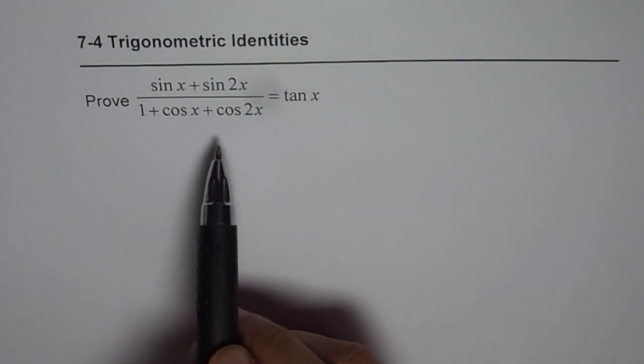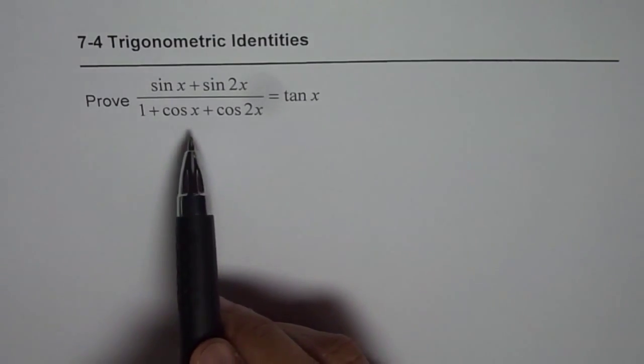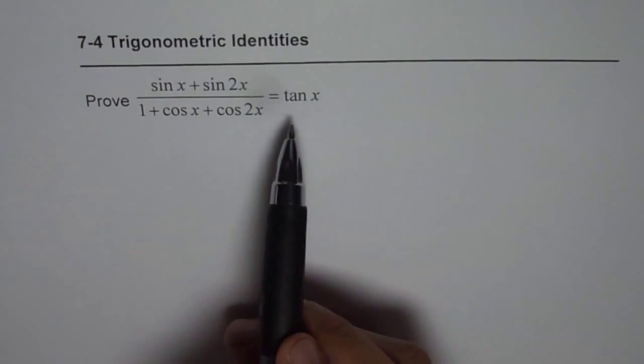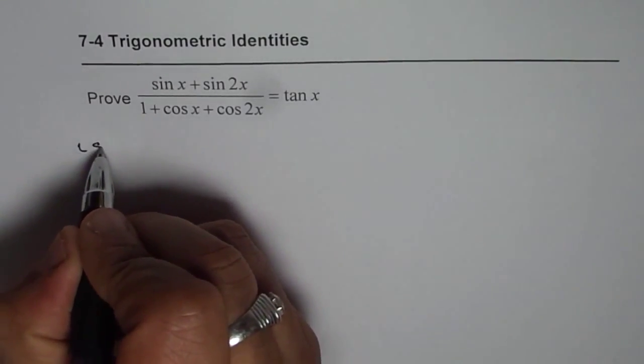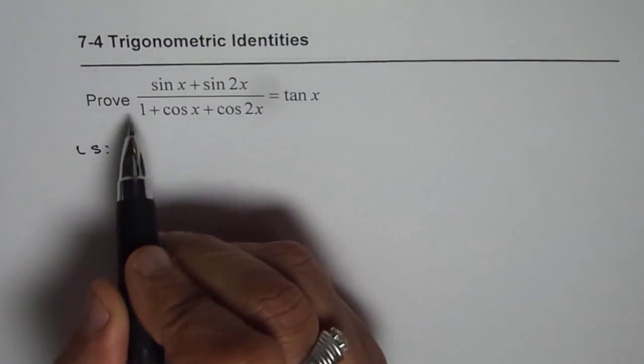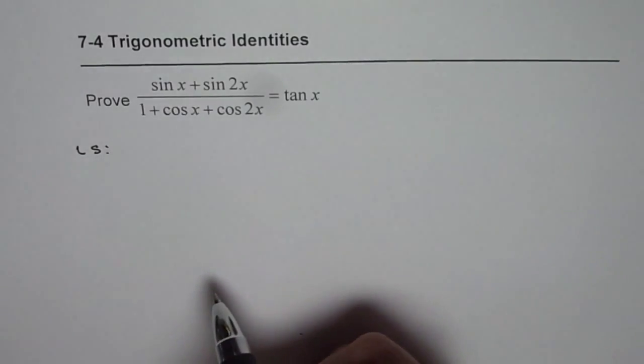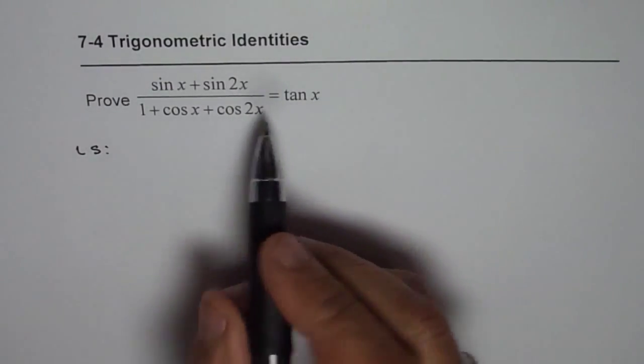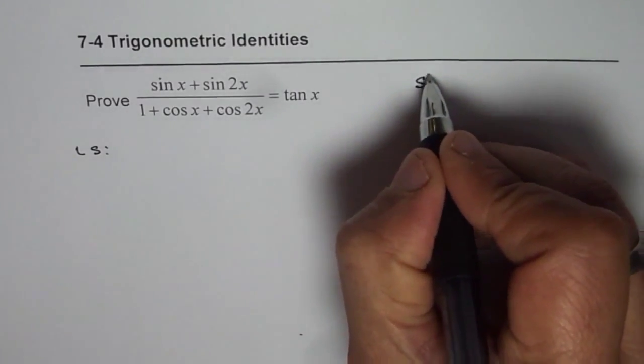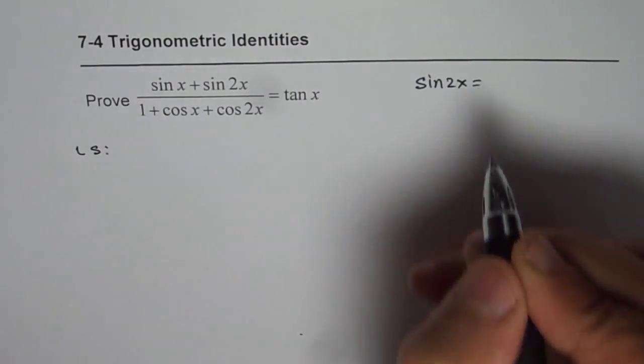In proving trigonometric identities we should start from one side and get what is required from the other side. We will begin by solving the left side. Left side seems to be more complicated so it can be simplified. It has terms like sin 2x and cos 2x. So let us put our formulas for sin 2x and cos 2x.